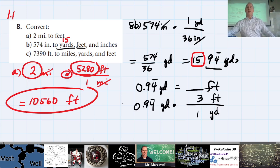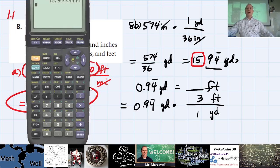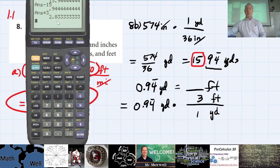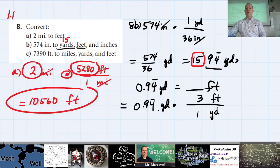On the calculator, subtract 15 from the previous answer to get just the 0.94̄ repeating decimal, then multiply that by 3. The result is 2.8̄3̄ repeating, which is in feet.